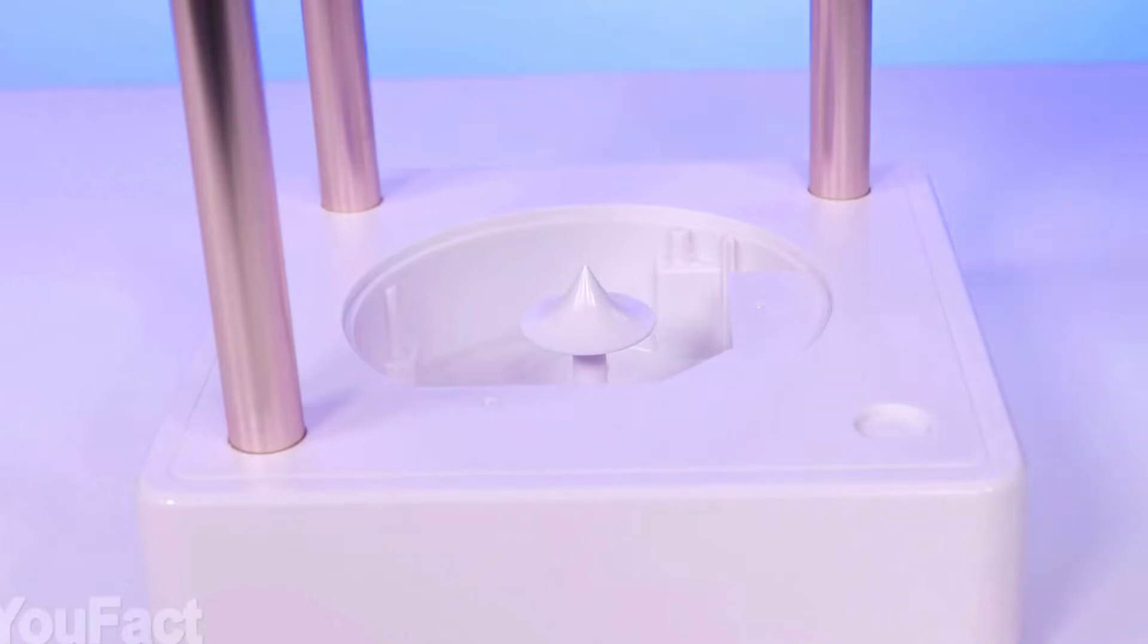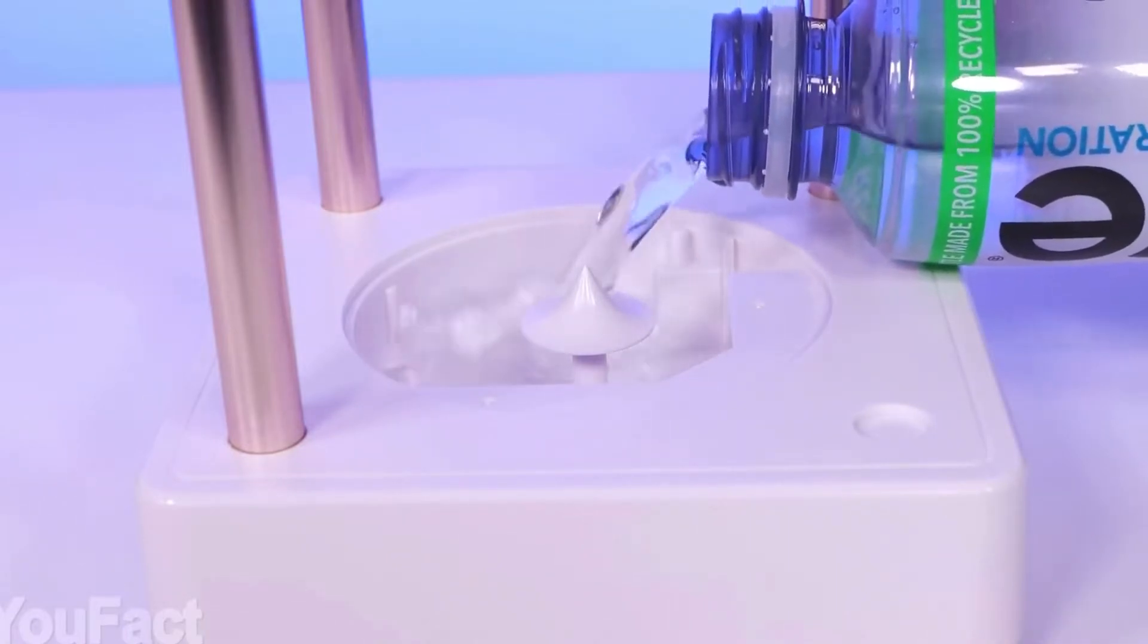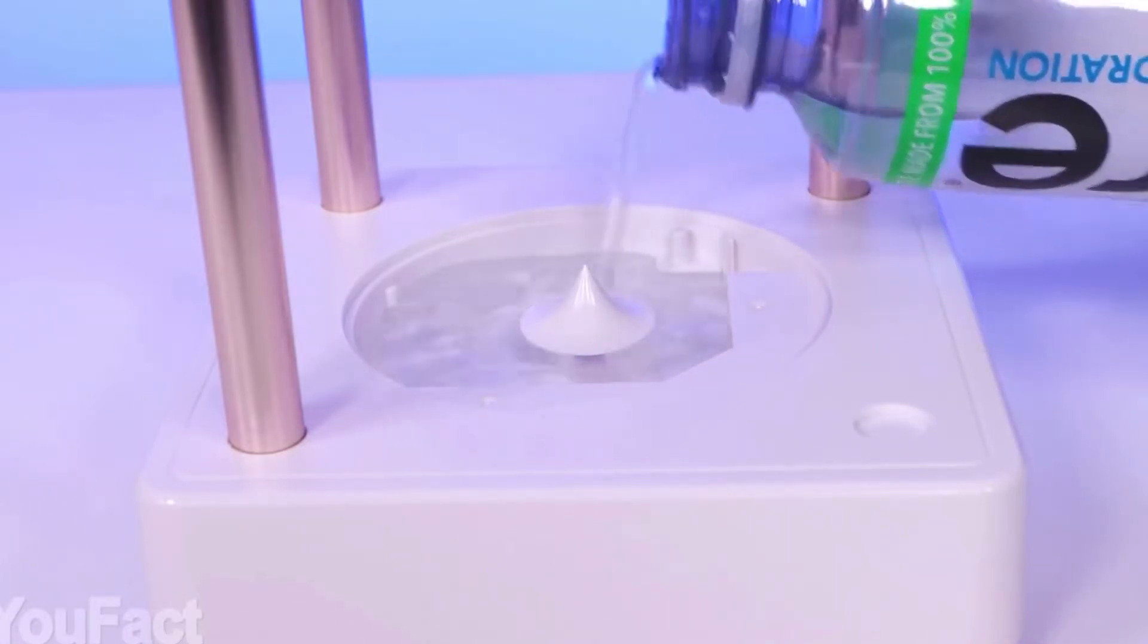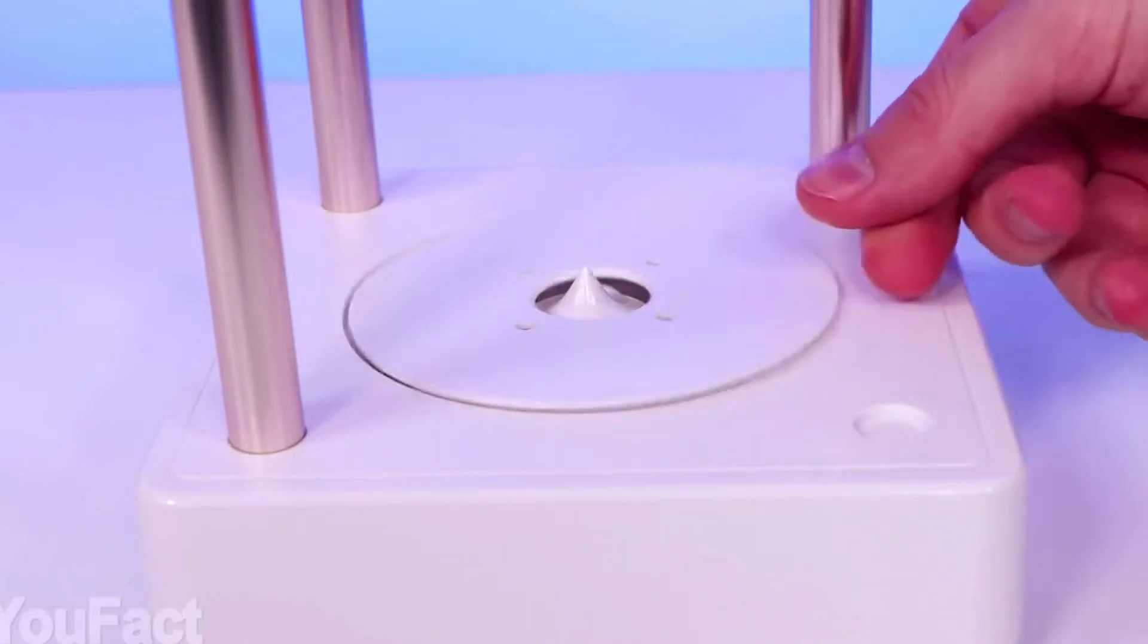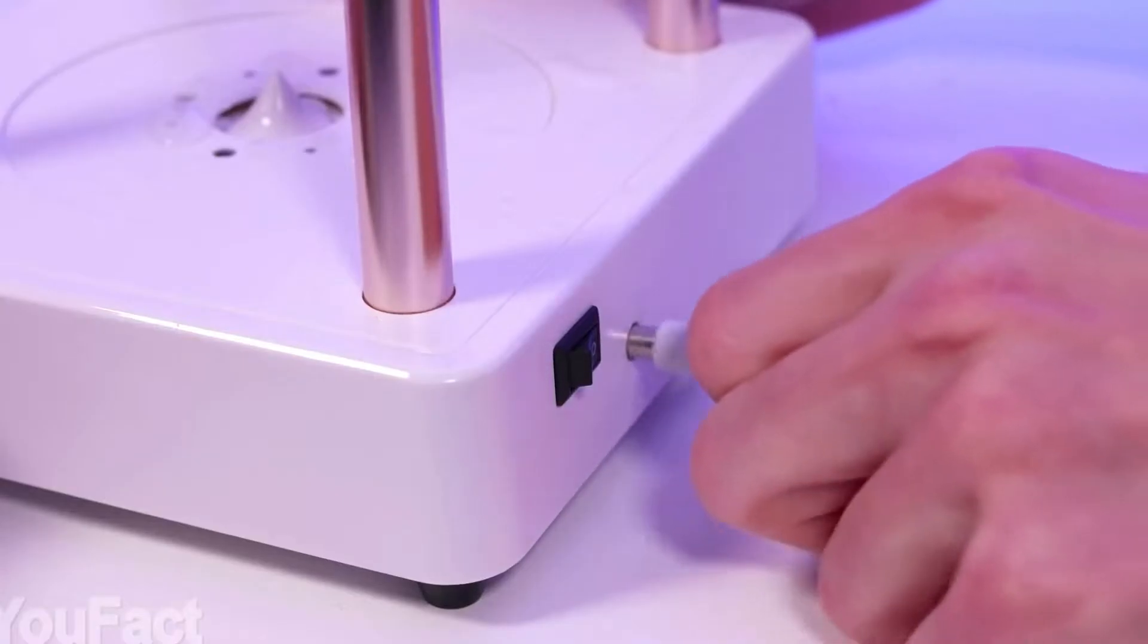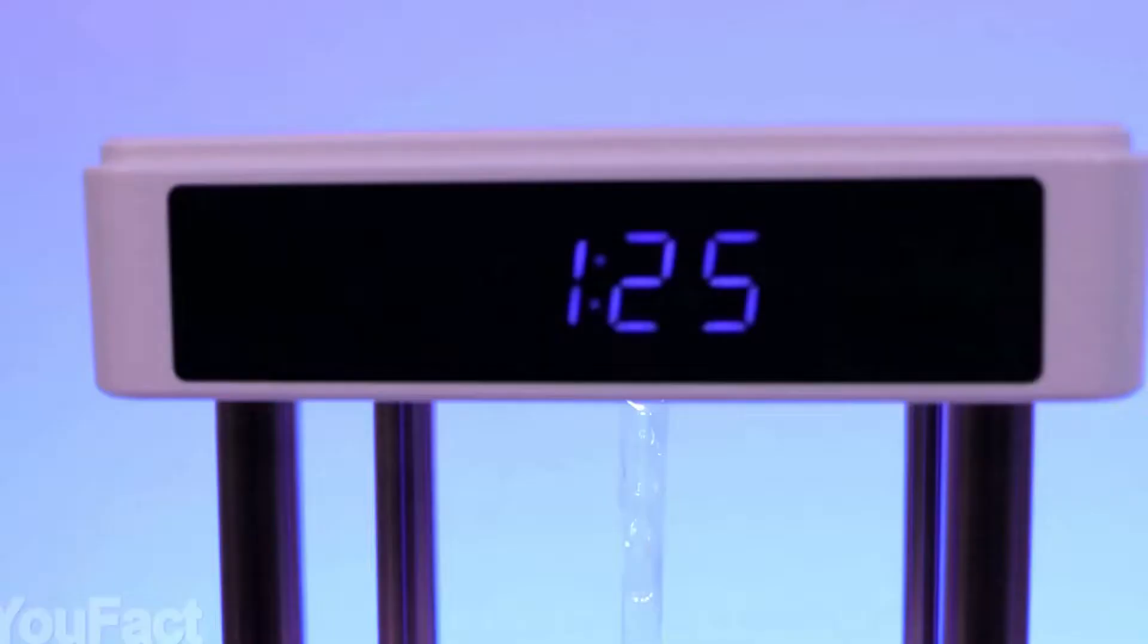Let's turn this thing on. Setting it up is simple—just pour in some water into the special compartment and close the lid. That's it. Now plug in the power cord and turn on the gadget. The display on the top part lights up showing the time.